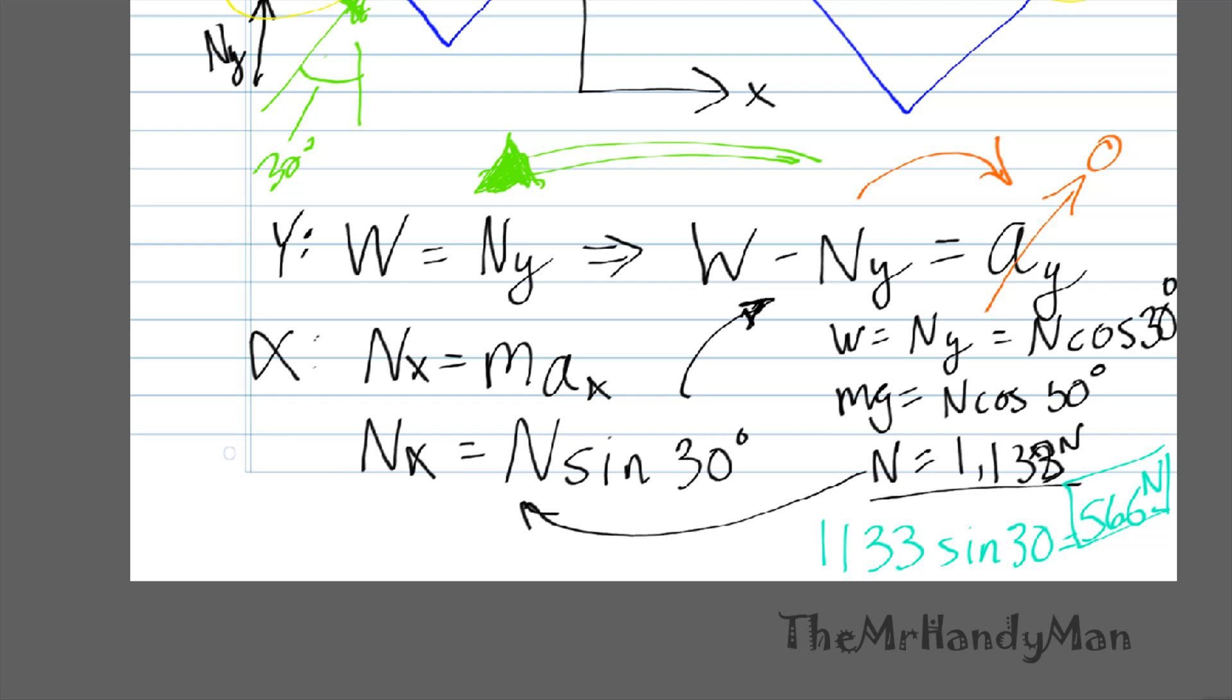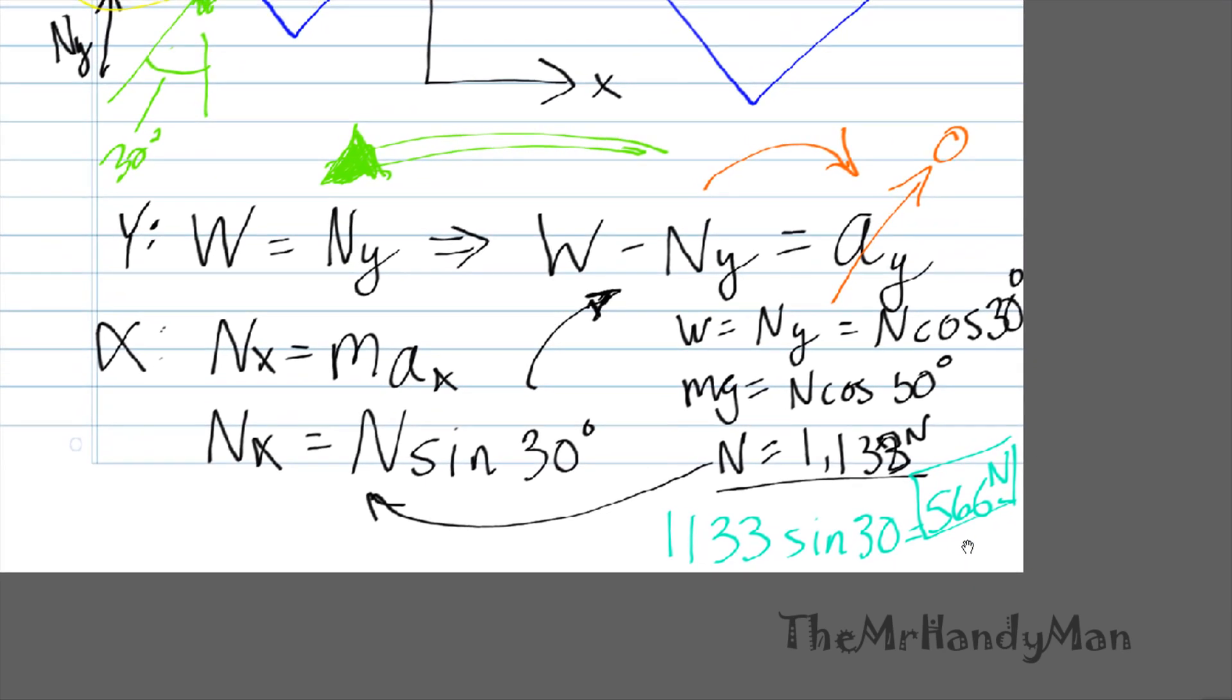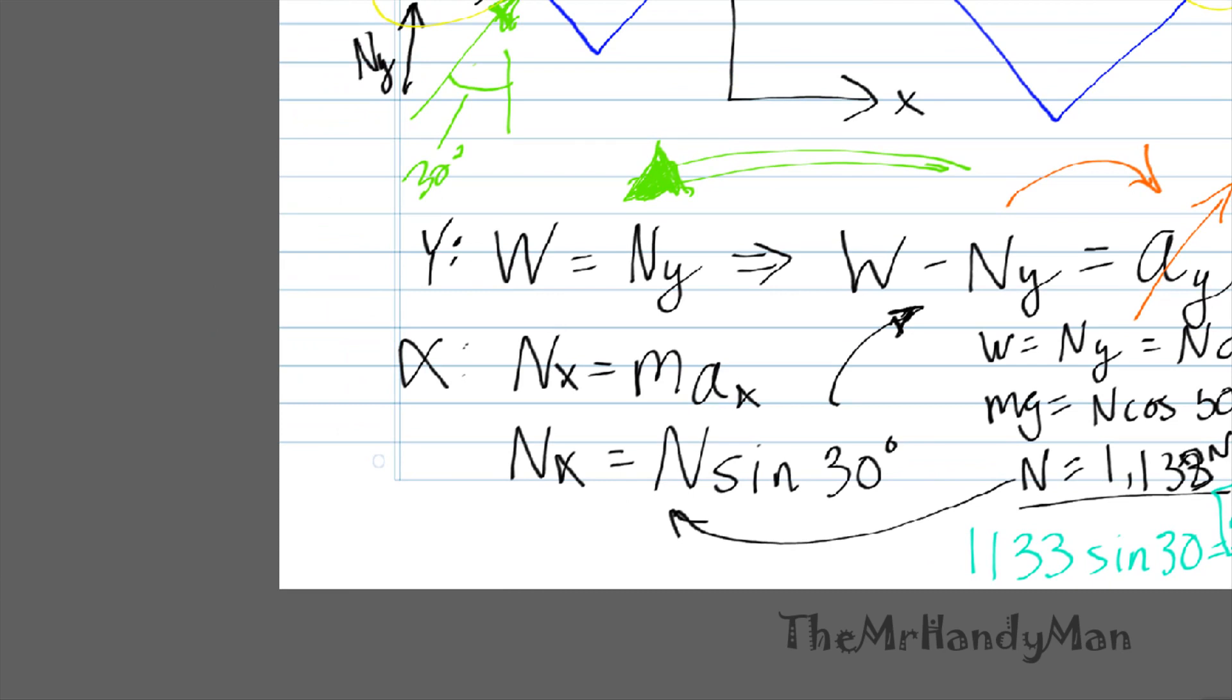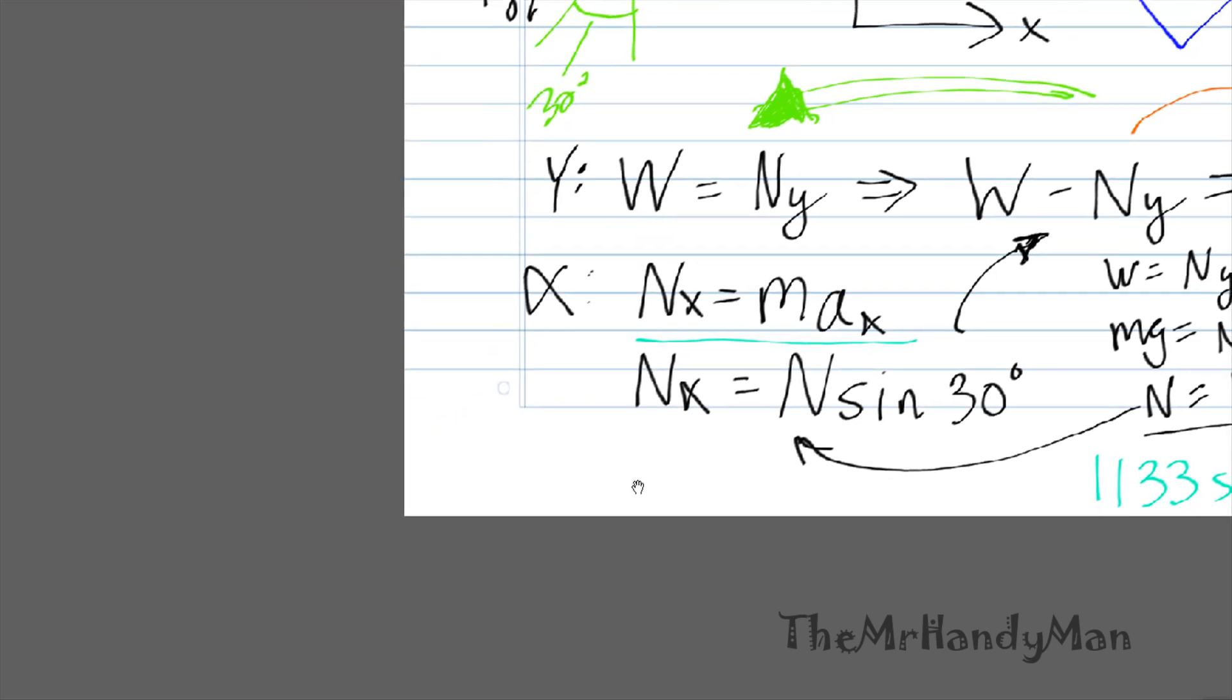Let's just recall that now that we have Nx, we know that Nx equals your mass times acceleration in the x direction. When we solve for that, you should have 566 equal to mass, which is 100, times ax. Simple math problem, ax is equal to 5.66 meters per second squared.